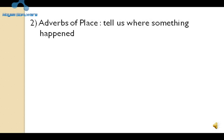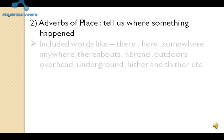Adverbs of time के साथ, adverbs of place भी important होते हैं। They tell us where something happened. कहाँ पर क्या हुआ है, इसके बारे में adverbs of place जानकारी देते हैं। जहाँ पर जगह का उल्लेख होगा, स्थान के बारे में हम कुछ बात करेंगे, तो समझ लेना कि ये adverbs of place हैं।